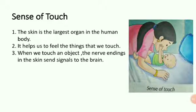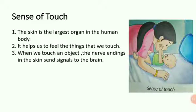The skin is the largest organ in the human body. It can help us to feel the things that we touch. In the skin, thousands of nerve endings are there which send signals or information to the brain. When we touch any object, it decides whether the object is hot or cold, rough or smooth, wet or dry, etc.